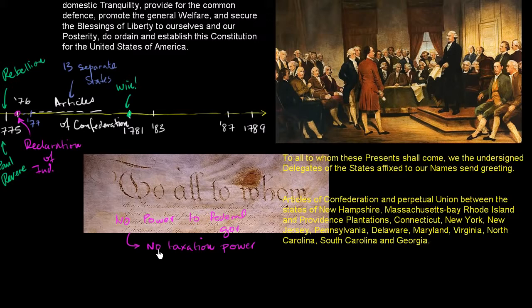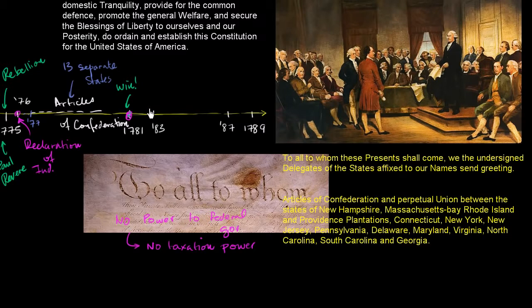What's kind of amusing is that we win the Revolution at the Battle of Yorktown in 1781. A messenger comes riding into New York where Congress has been meeting — it sort of floated from city to city — and gives them all the details. And they don't even have enough money to pay the messenger. They have to reach into their own pockets to do it.